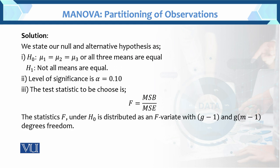To perform MANOVA, first state the null and alternative hypothesis. The null hypothesis is μ₁ = μ₂ = μ₃ — all three means are equal. The alternative hypothesis is that all three means are not equal. The level of significance alpha is 0.10 (10%). The test statistic for MANOVA is mean square between over mean square within. This example is the unequal-in-size case.